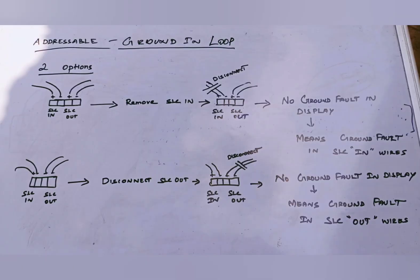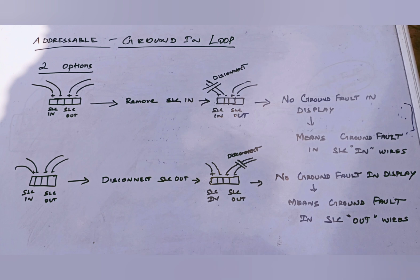First one, when you will disconnect SLC in pair of wire. If FACP will not show the ground fault exists, which means SLC in has the ground fault. When you will disconnect SLC out pair wire. If FACP will not show the ground fault exists, which means SLC out has the ground fault. Vice versa.